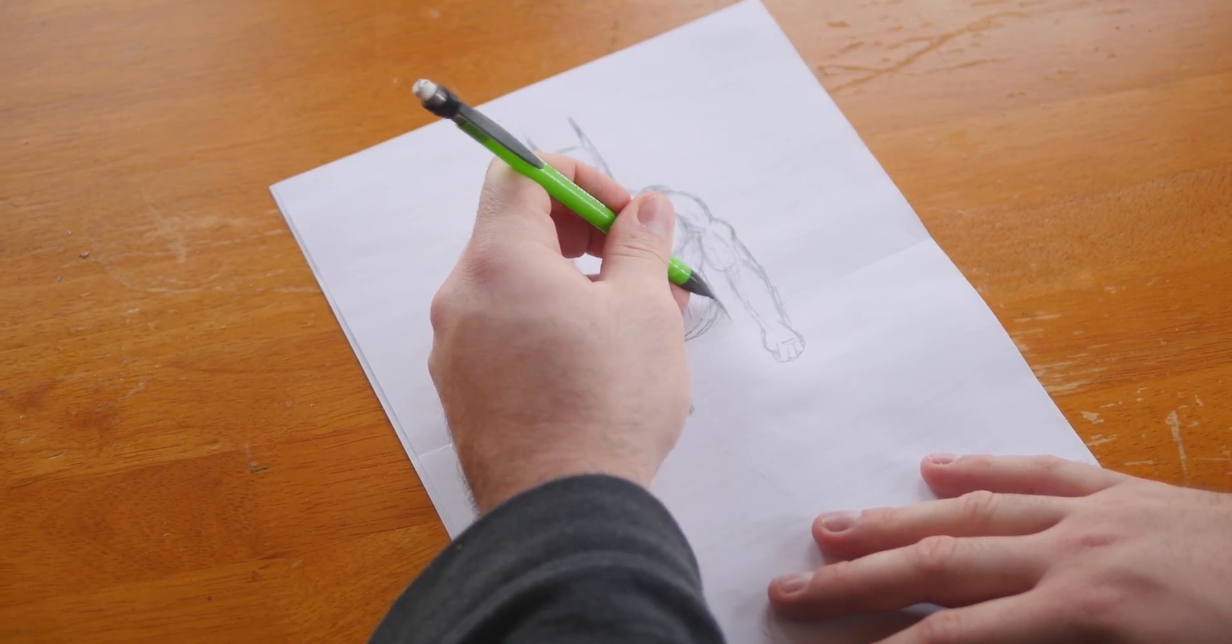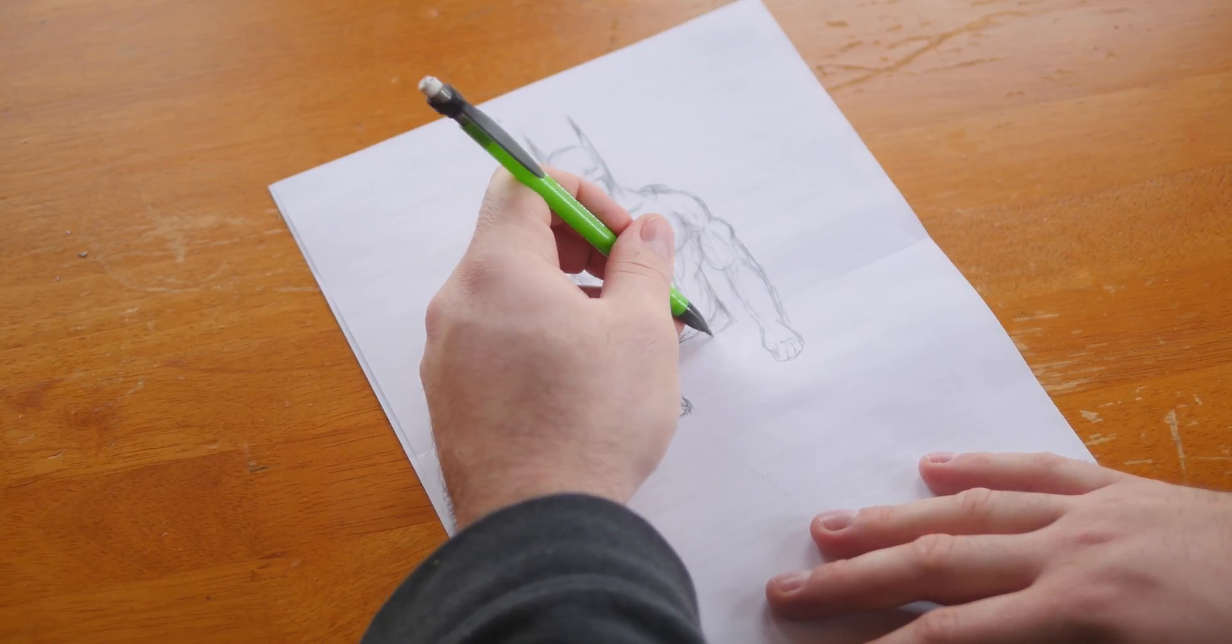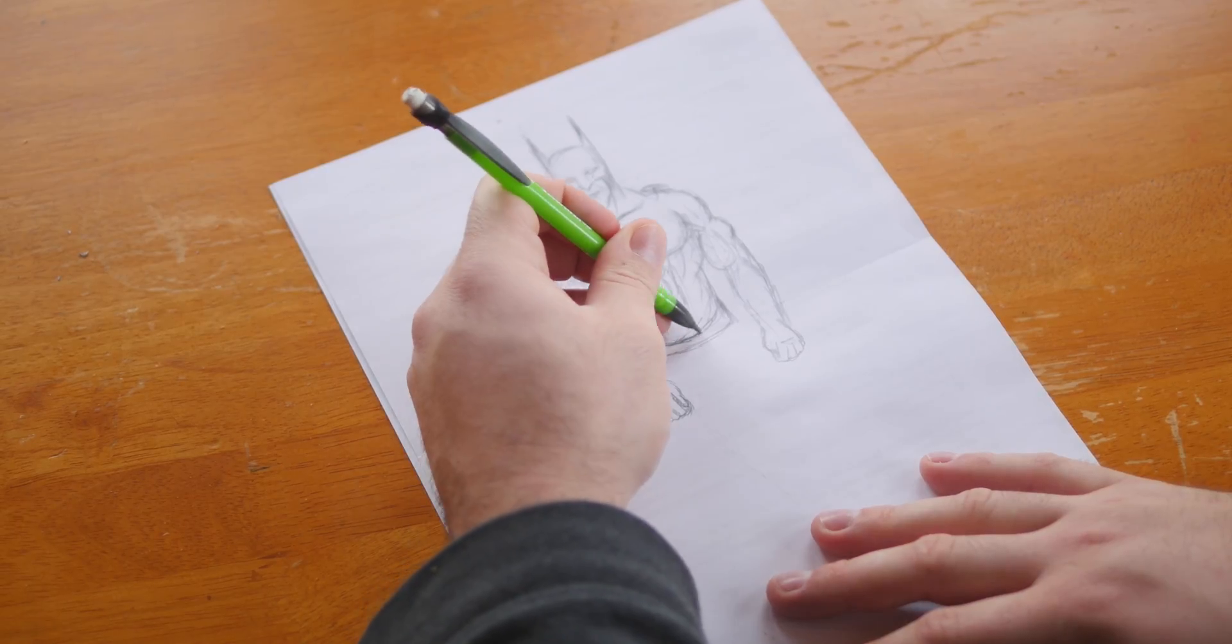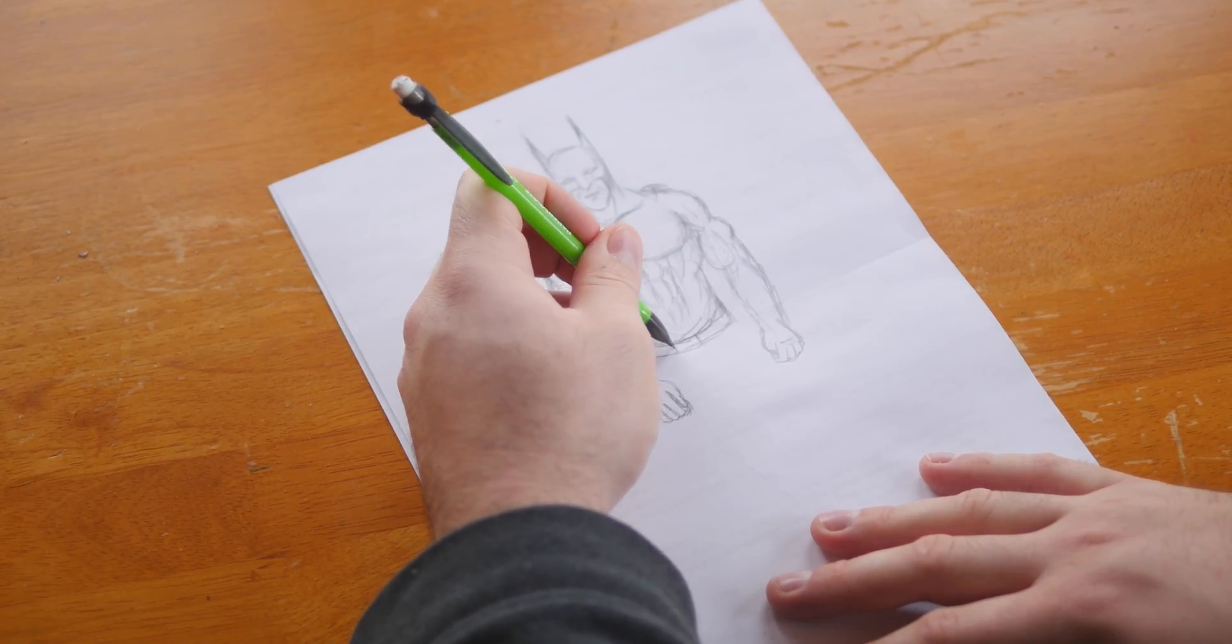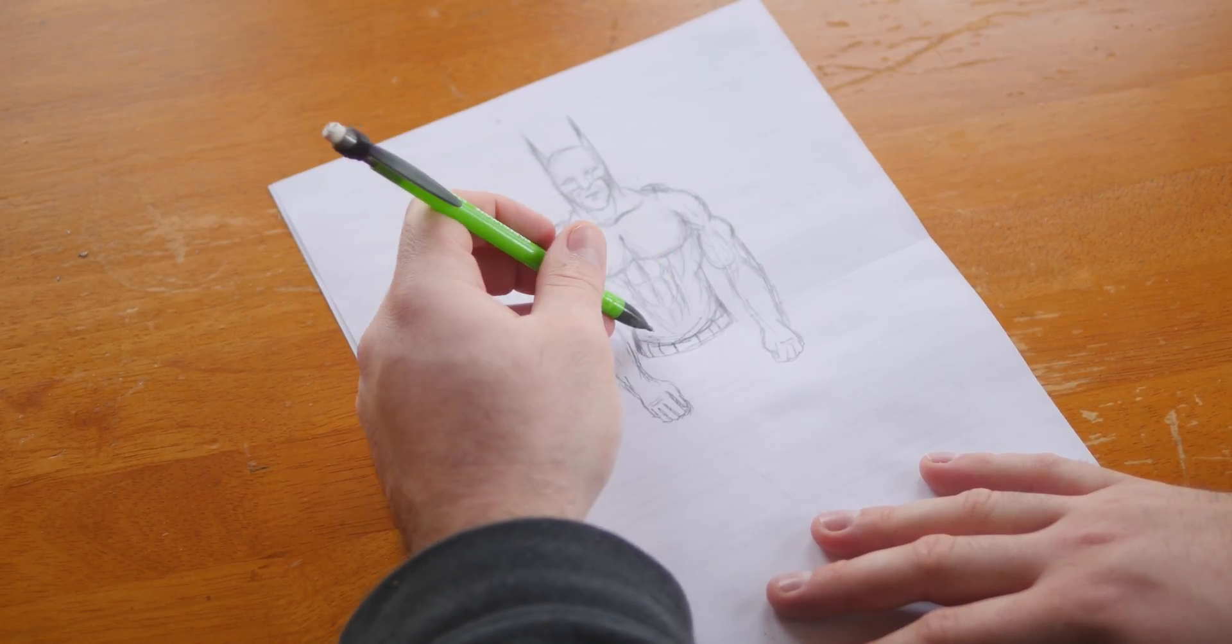So let's do the utility belt. I like to have it kind of stick out just a bit. Now I like the classic animated series Batman. It's just a belt with little lines in it that each has a compartment.